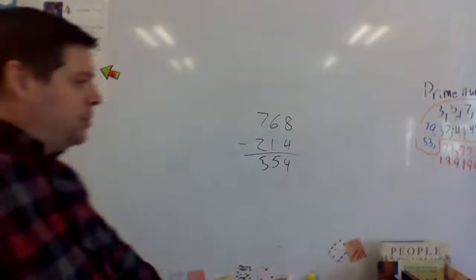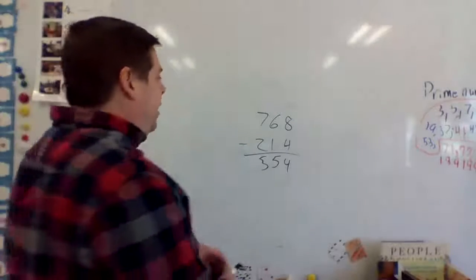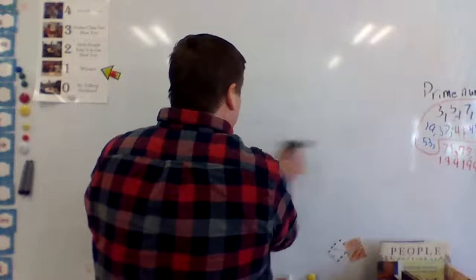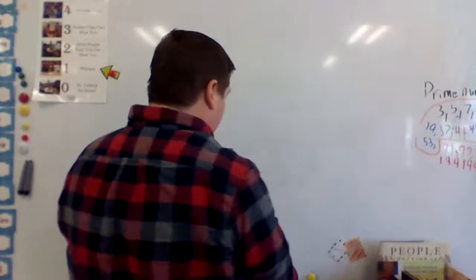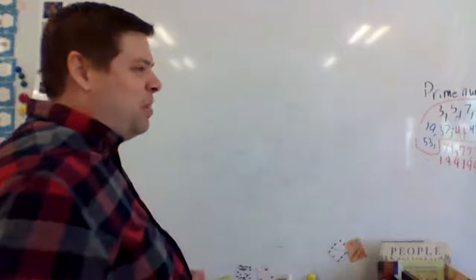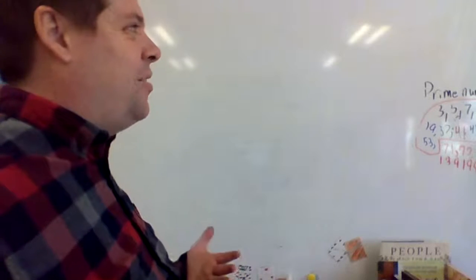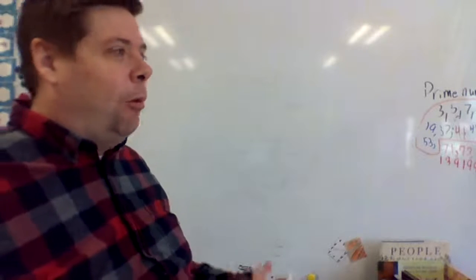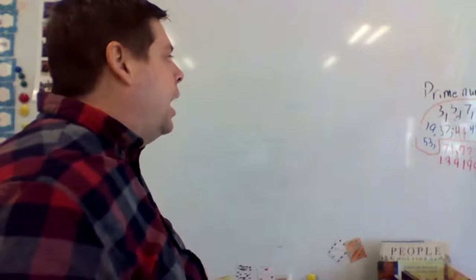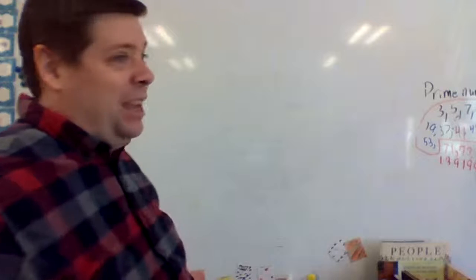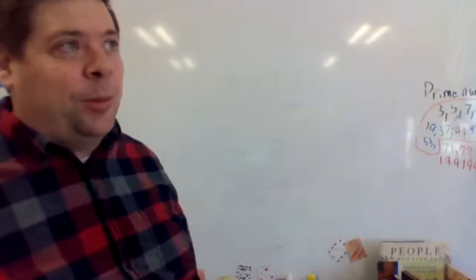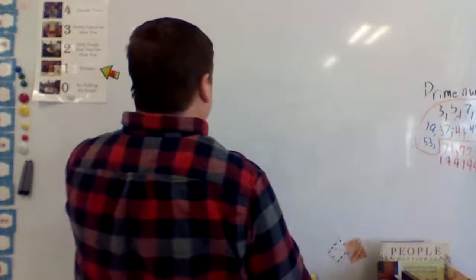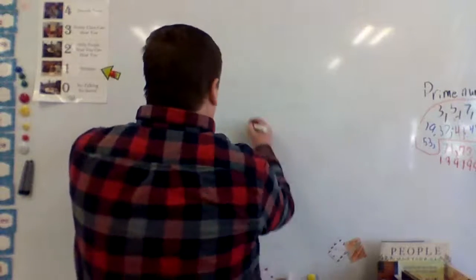One of the big problems that people have with subtraction is when you're doing regrouping. What regrouping means is that you have to change some of the values of one number in order to make it subtractable by another number.